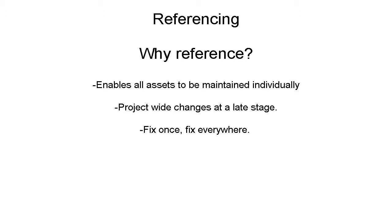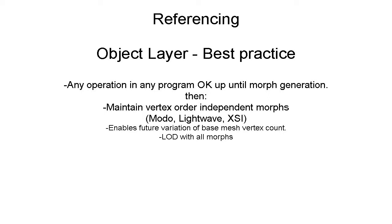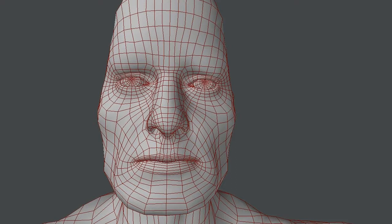At the object layer, the best practices are that you can do whatever you want up until the point when you have your final objects. Up until the point where you have vertex-order-dependent things, you need programs like Modo, XSI, or LightWave, which all have a vertex-order-independent morphing system.